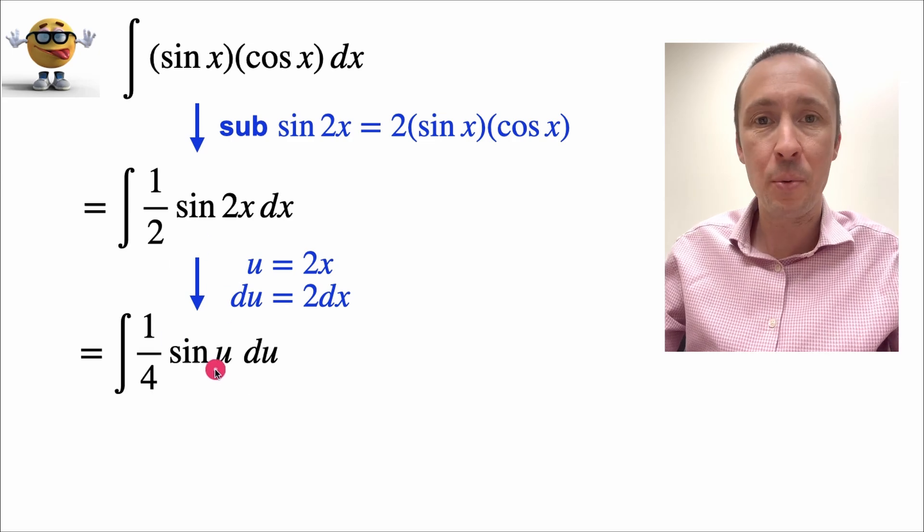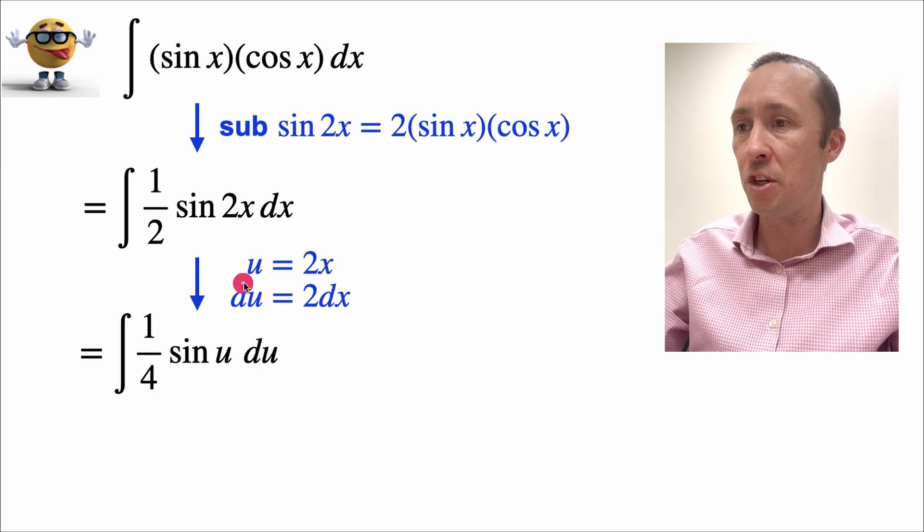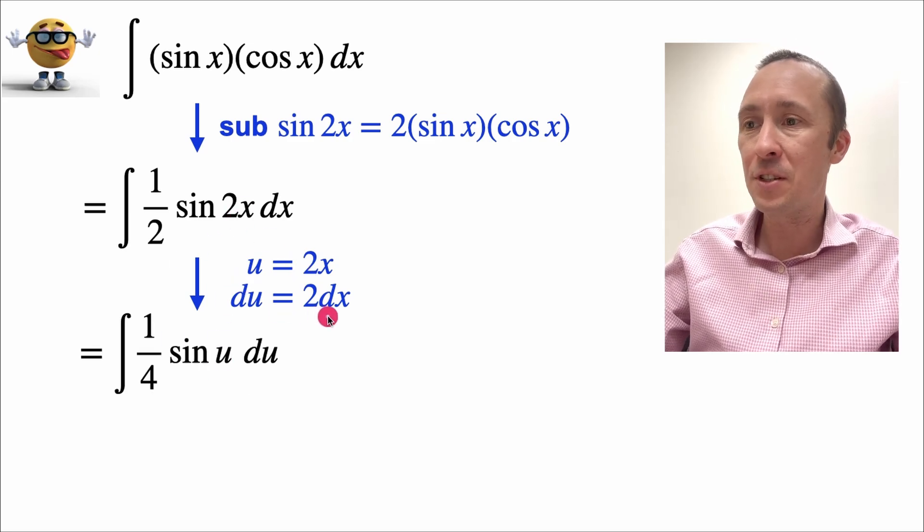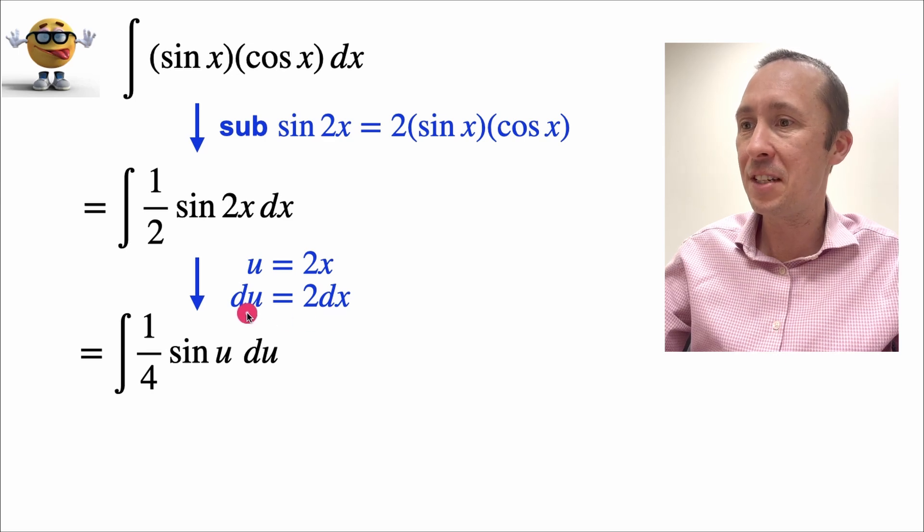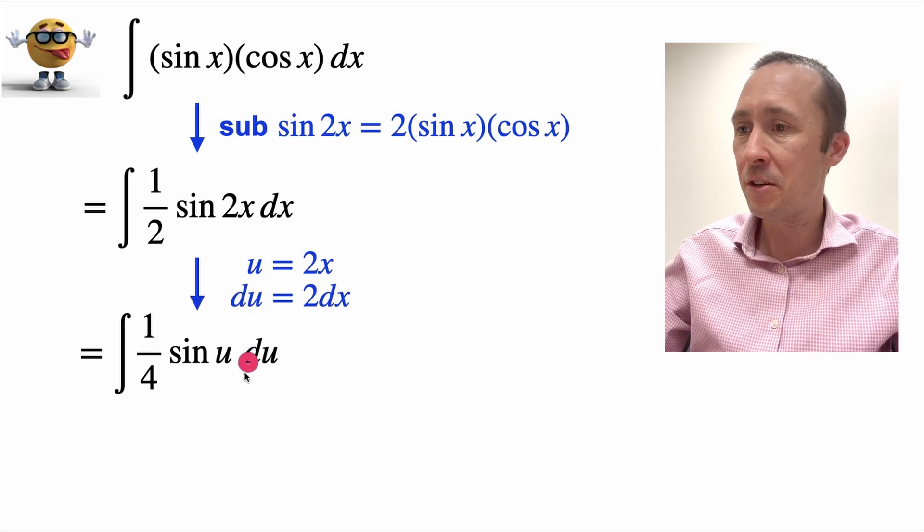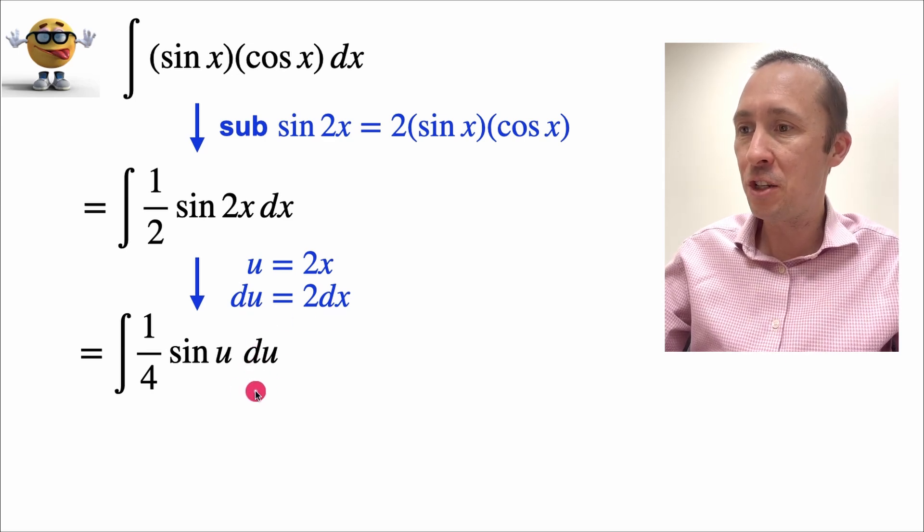If we plug that in, 2x is u, and if we solve for dx, dx equals du divided by 2. So here's our du, and our divided by 2 gets multiplied by this one half to give a quarter.